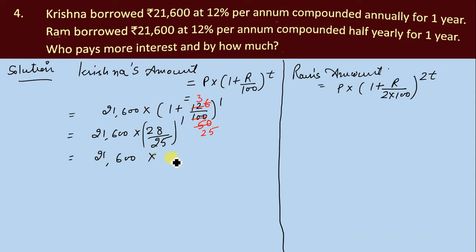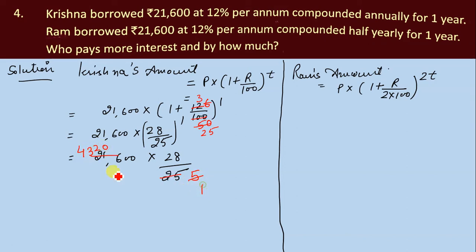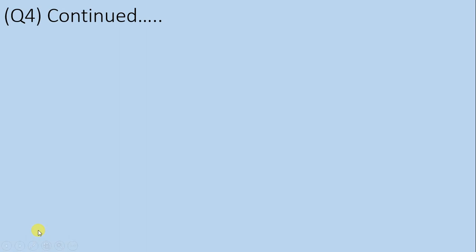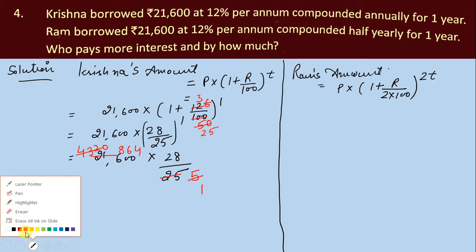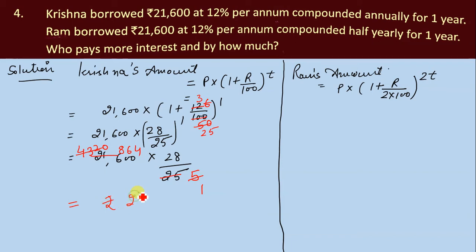After cancellation for Krishna's calculation, we get 21,600 into 28 upon 25. Cancelling further: 21,600 into 28/25 gives us 864 into 28, which equals 24,192. So Krishna's amount is ₹24,192.